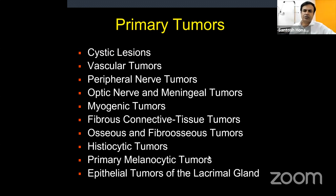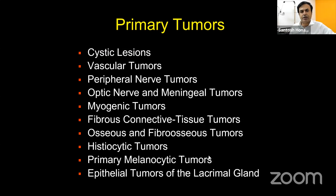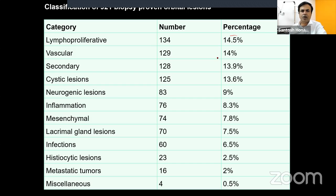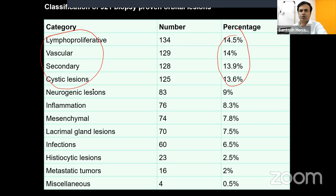At the end of a good clinical evaluation and imaging, you should narrow your differential diagnosis to two or three conditions — not just based on imaging appearance and palpation, but also on epidemiology. In adults in India, the top four are lymphoproliferative, vascular, secondary, and cystic, followed by neurogenic, inflammatory, mesenchymal, and lacrimal gland lesions.